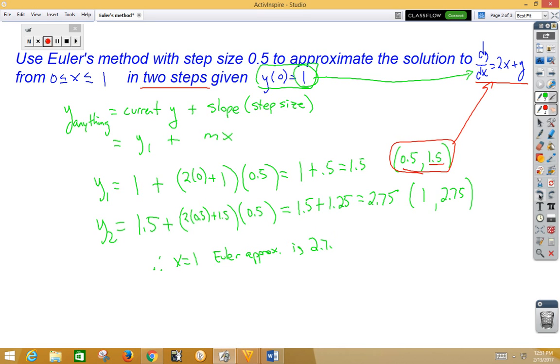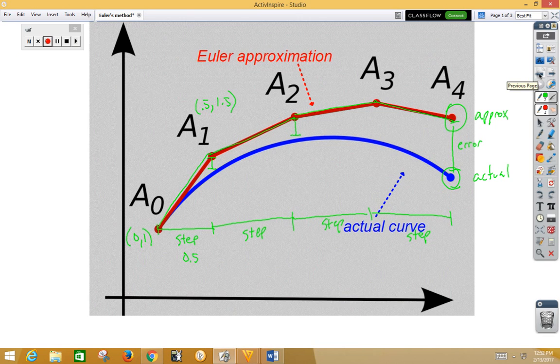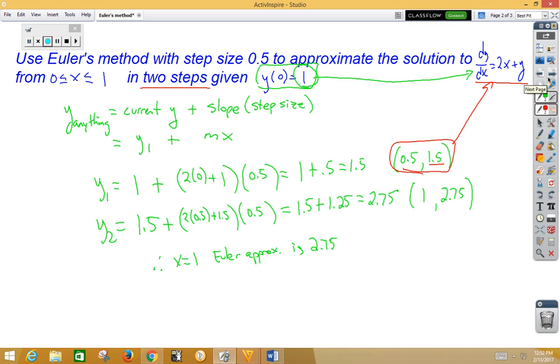So, if we go back to our graphic, we took one more step, which was a length of 0.5, which means we've now traveled a total distance of 1. So this point would be our 1 and our 2.75. And we're using this as our approximation to that curve. So I hope that made sense to you, and we'll probably do another.